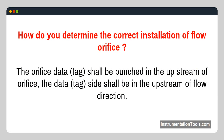How do you determine the correct installation of a flow orifice? The orifice data tag shall be punched on the upstream side of the orifice, and the data tag side shall be in the upstream direction of flow.